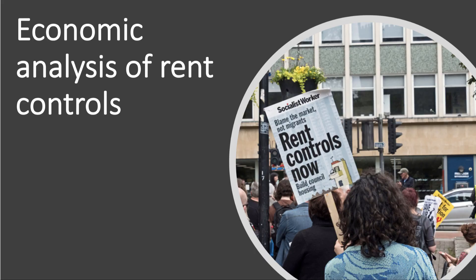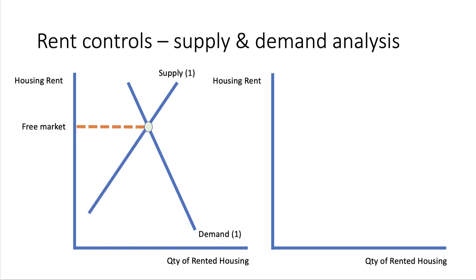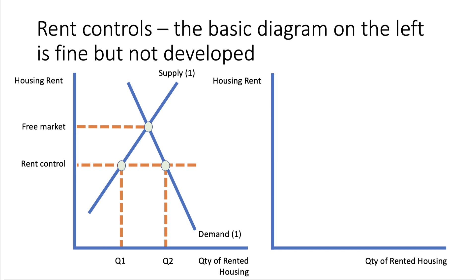Two examples now on the micro side - two relatively common and topical questions. At the moment there is a lot of interest in the idea of introducing some form of housing rent control, some sort of maximum price on renting. On the left hand side I'll put together a nice simple rent control diagram. Here's the free market average rent in a city or a town - to have any effect on the market you have to set the capped rent below it. With a rent control below the free market rent, the supply of rented property contracts to Q1, demand expands to Q2, and you create an excess demand in the market. That diagram is perfectly fine - it shows the impact of a rent control - but it's not developed; the student hasn't taken the analysis further using the diagram.